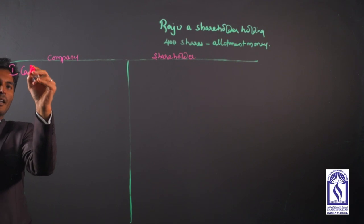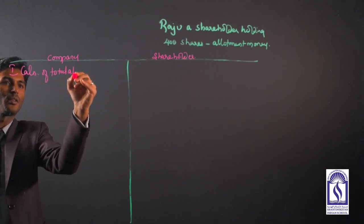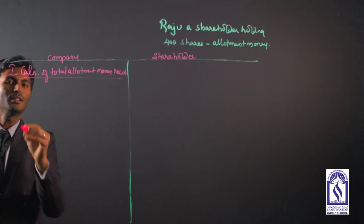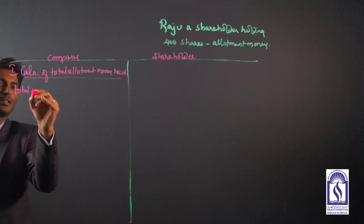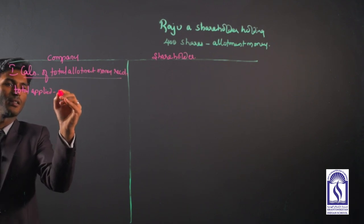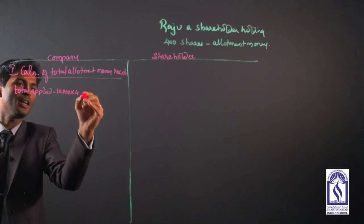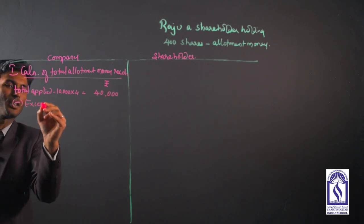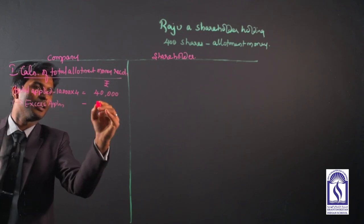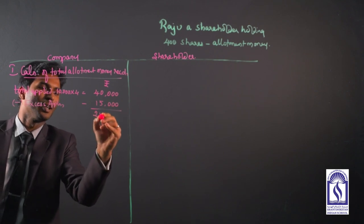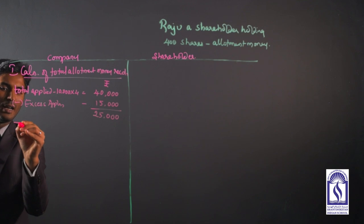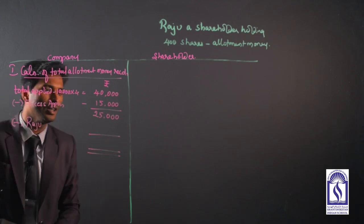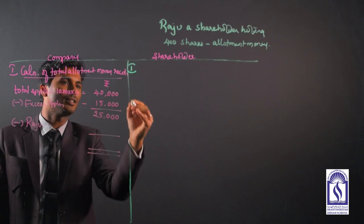Let us find out step number one: calculation of total allotment money received. Under this we have to find total applied. So total applied 10,000 into 4, we have to receive 40,000 rupees. Under this we have received some excess application that we have shown in the previous entry, so the company has 15,000. Right now the company has to receive 25,000. Under this there is a shareholder Raju who hasn't paid the money. So we have to find out Raju's money and then we have to evaluate. To do Raju's calculation we have to follow again three steps.